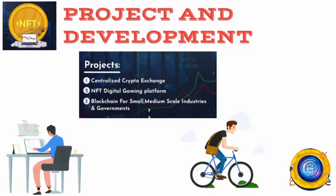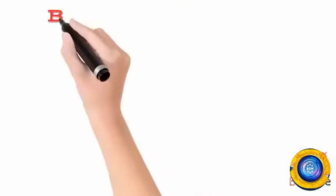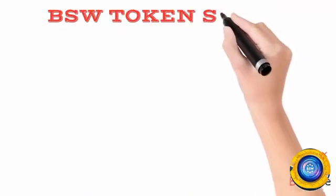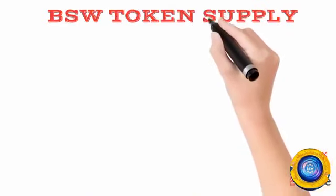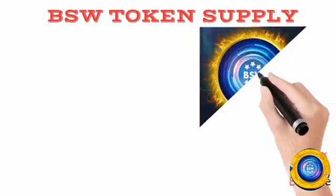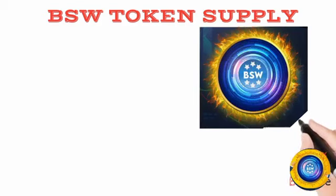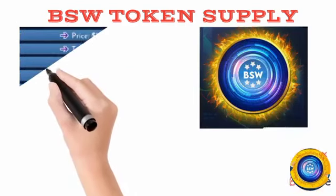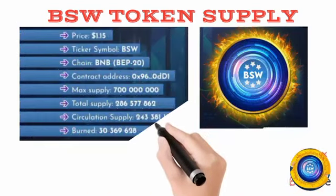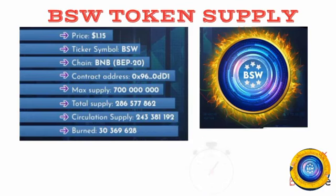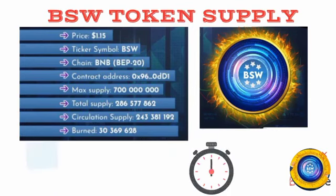Next, company BSW token supply. BSW token has very wide supply all over the world. This token supply price is $1.15, ticker symbol BSW, on the BNB chain. Total max supply is 70 crore and total supply is 20 crore at 6 lakhs.